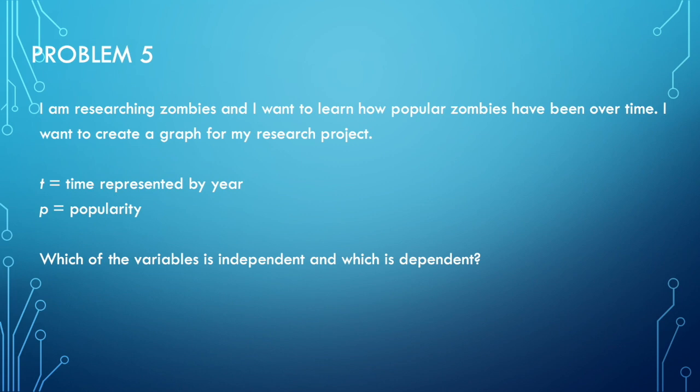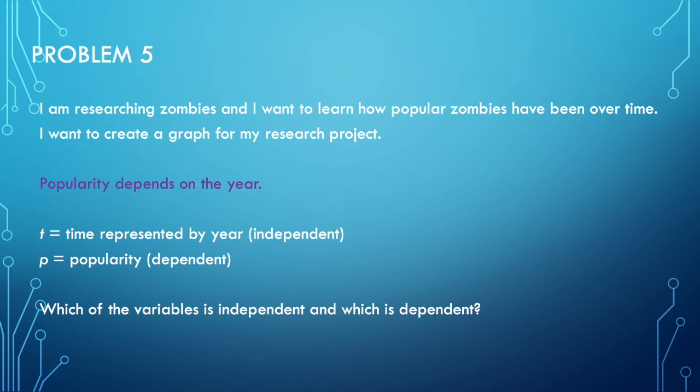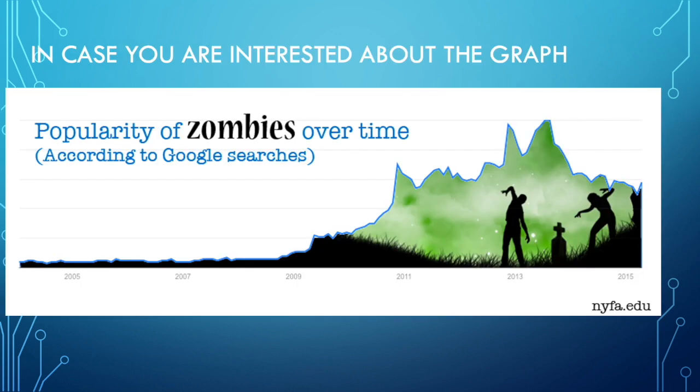Problem five: I am researching zombies and want to learn how popular zombies have been over time. T is time represented by year, and P is popularity. The popularity depends on the year, which means popularity is dependent and time is independent. Here's a quick example graph of the popularity of zombies over time.